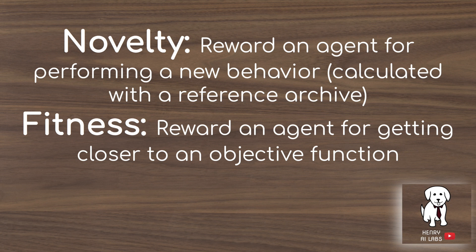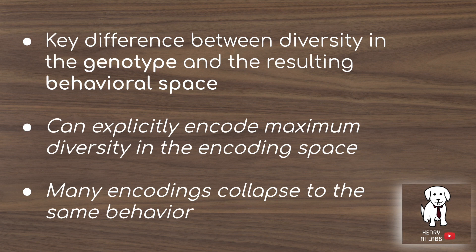In the algorithm, agents are rewarded based on novelty — for performing a new behavior calculated with a reference archive of all previously explored behaviors. This is in contrast to fitness-objective algorithms that reward an agent for getting closer to an objective function. There's a key difference between diversity in the genotype or encoding space versus the resulting behavioral space. You can imagine explicitly encoding maximum diversity in the encoding space, but many encodings collapse to the same behavior, and it's not clear how to map from encoding to behavior in tasks like biped locomotion and maze navigation.